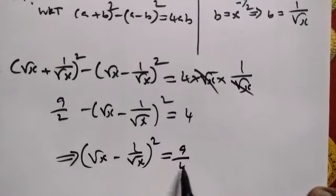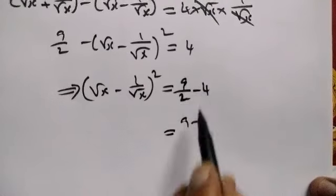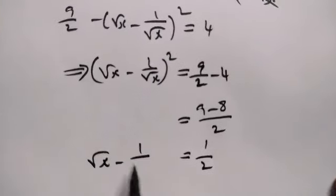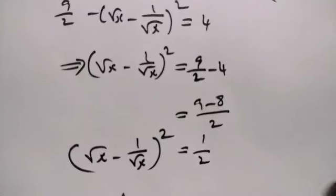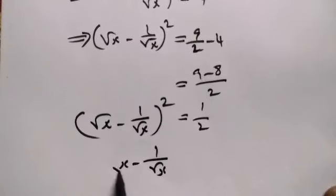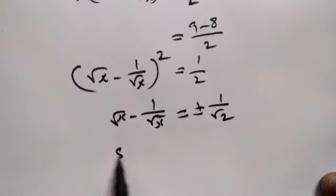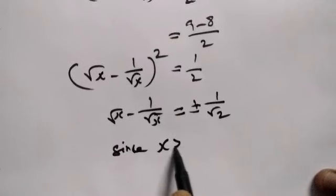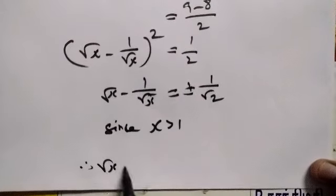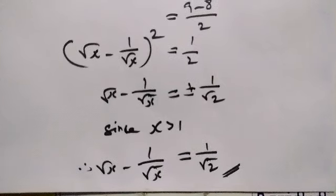Therefore, (root x − 1/root x)² equals 9/2 minus 4, which is 9/2 minus 8/2, giving 1/2. Taking the square root, root x minus 1/root x equals plus or minus 1/root 2. Since x is greater than 1, the negative value is omitted, so root x minus 1/root x equals 1/root 2.